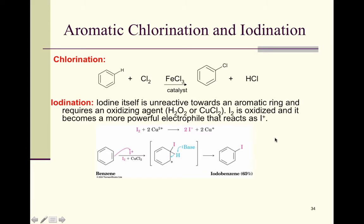Iodine itself is unreactive toward the aromatic ring, but we can get it on there with an oxidizing agent such as hydrogen peroxide or copper chloride. For how the electrophile is prepared: iodine reacts with copper(II) to form two iodines with a positive charge and then copper. Once I+ is formed, the pi electrons attack it. When writing out this mechanism, write I+ on top, I2 plus CuCl2 on the bottom, and show the curved arrow toward this iodine.